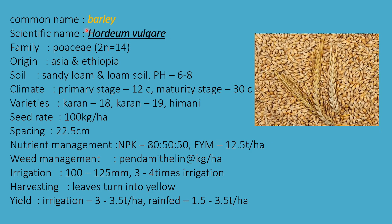The next cereal crop is barley. The scientific name is Hordeum vulgare, family Poaceae. Chromosome number 2n = 14, origin Asia and Ethiopia. Soil required is sandy loamy to loamy, pH 6.6 to 8. In primary stages, 12 degrees Celsius is required; at mature stages, 30 degrees Celsius is required.